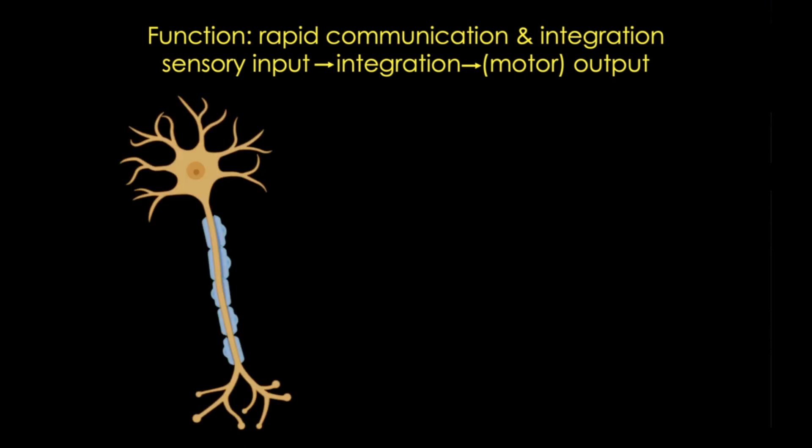To accomplish all these tasks, the nervous system has two major classes of cells. First, neurons, which are the functional and structural unit of the nervous system. These cells are electrically excitable and generate action potentials, and they're linked together into circuits which can have a few or hundreds or thousands of connections.